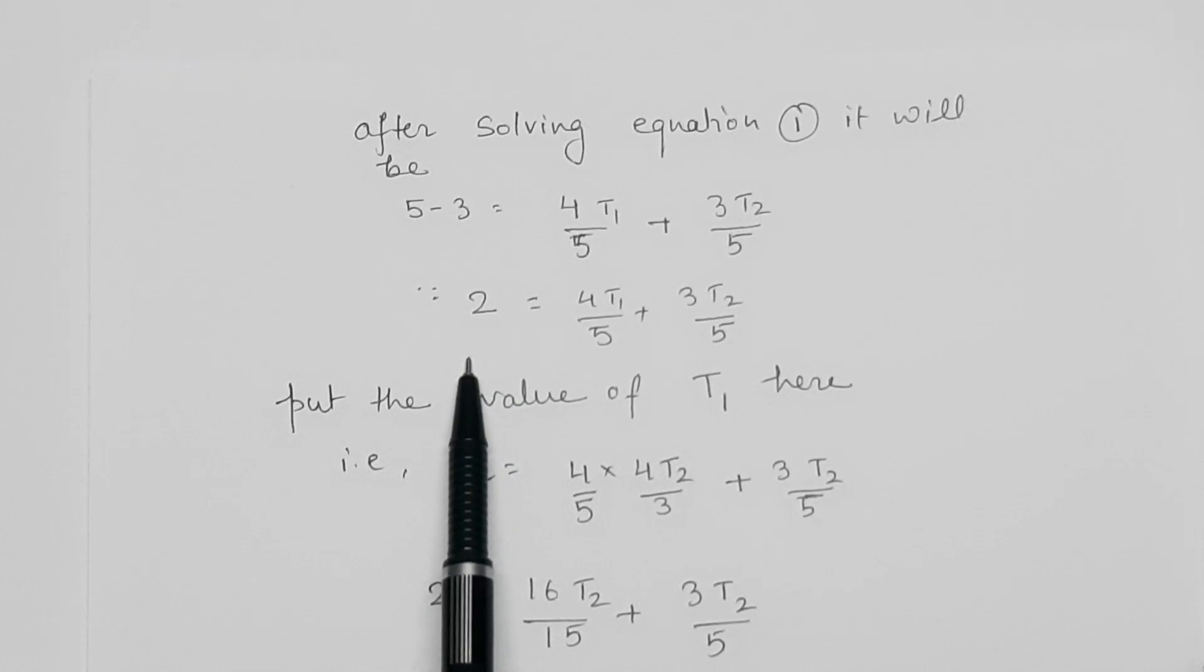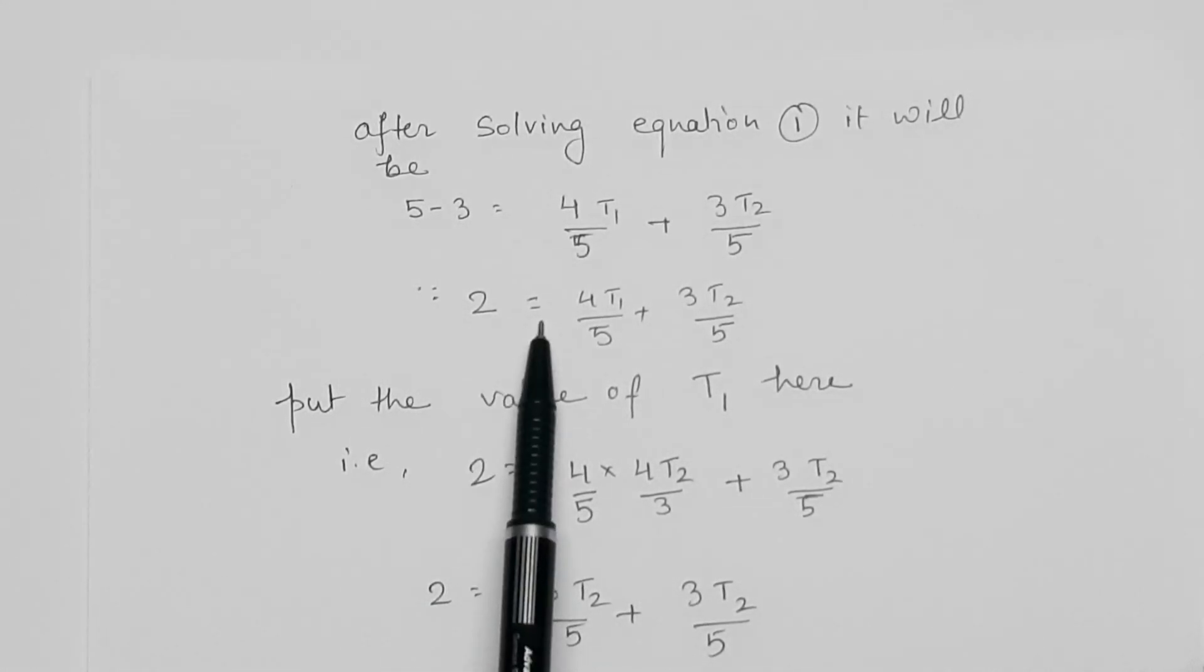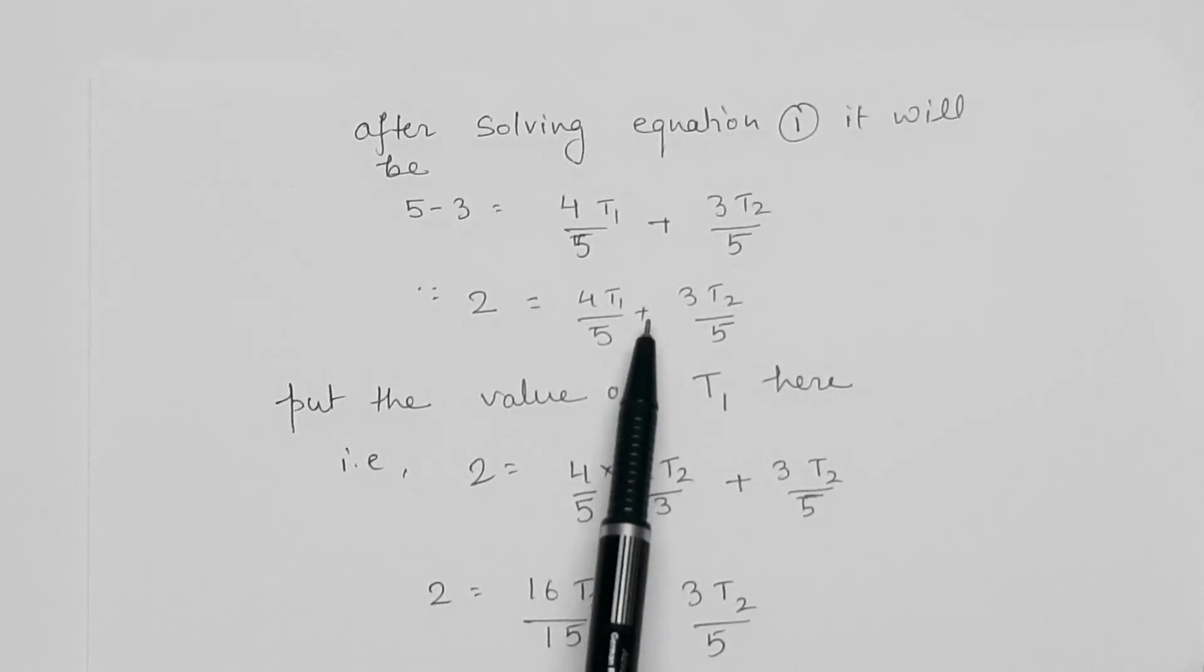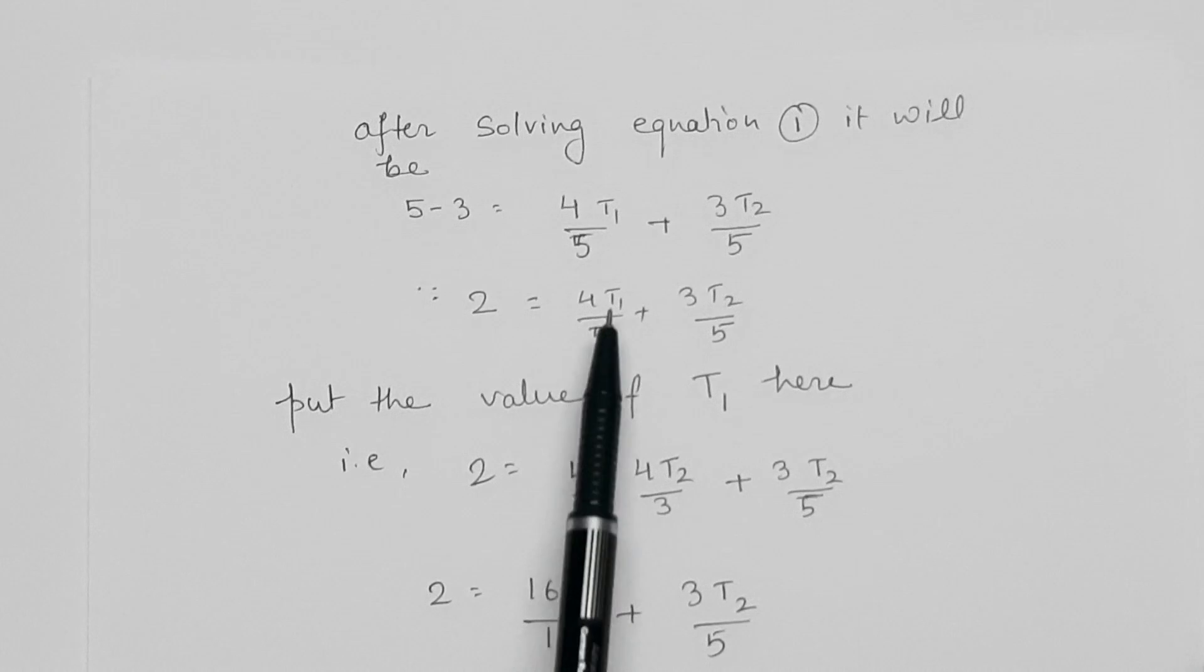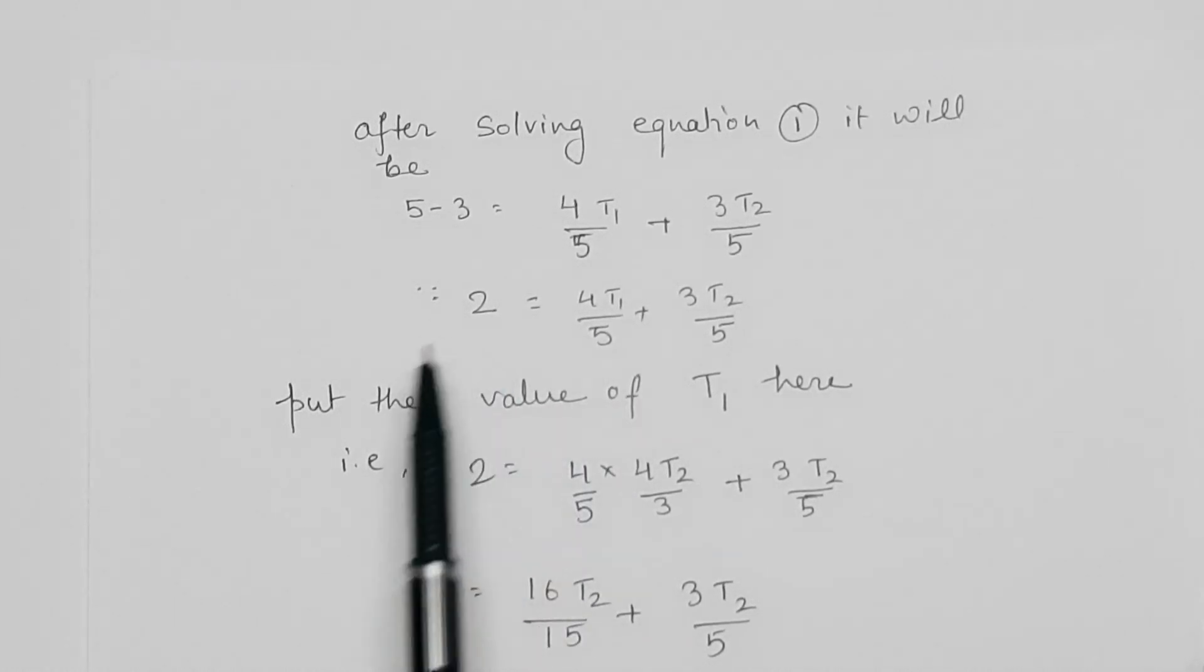After solving the vertical component equation we will get this one that is 2 is equal to 4T1 by 5 plus 3T2 by 5. In this equation we will put the value of T1 what we got before, that was 4T2 by 3. So now it will be 2 is equal to 4 by 5 into 4T2 by 3 plus 3T2 by 5.